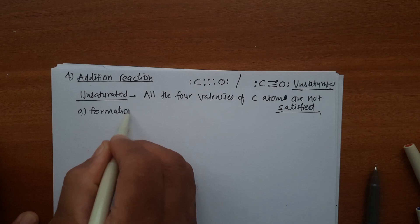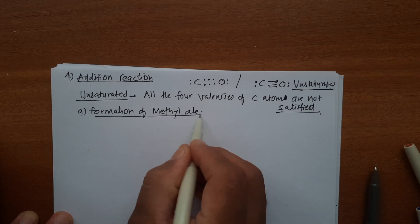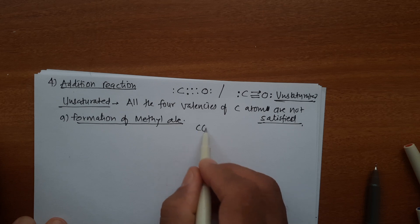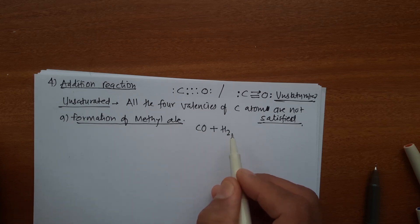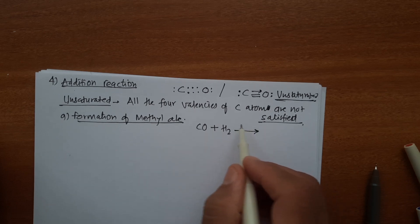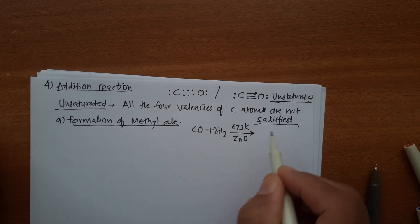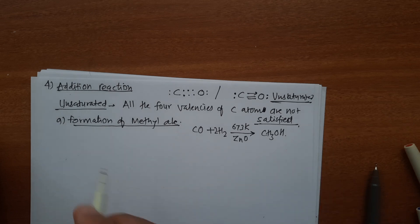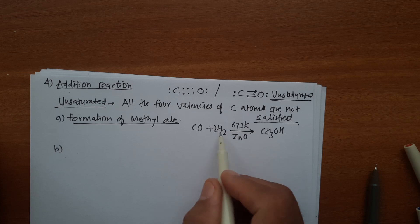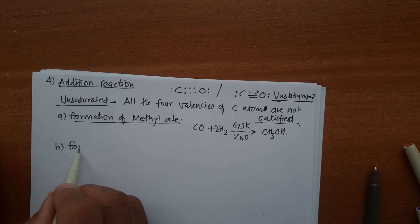The first addition reaction: formation of methyl alcohol. When CO is heated with hydrogen at about 673 Kelvin in presence of zinc oxide as catalyst, there is formation of methyl alcohol — CH₃OH. The hydrogen atoms are added to CO in this addition reaction.